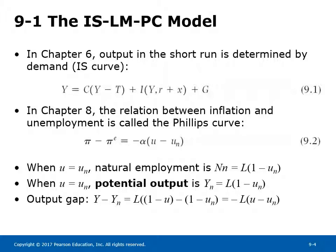To derive that, start by understanding that the unemployment rate U equals U over L, where U is the number unemployed and L is the labor force. Since L equals U plus N, where N is the number employed, U equals L minus N. Thus U over L equals 1 minus N over L, giving us N equals L times (1 minus U). Since Y equals N, Y also equals L times (1 minus U). Y_N indicates potential output, and the output gap — the difference between actual output Y and potential output Y_N — equals minus L times (U minus U_N).